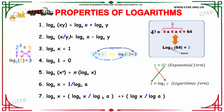By our third property, if the base and answer are the same, then the log of that value will be 1. The fourth property states that log of 1 to the base a is equal to 0. By our fifth property, log x to the power n to the base a is nothing but n multiplied by log x to the base a.